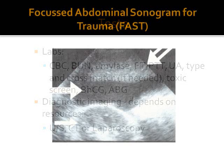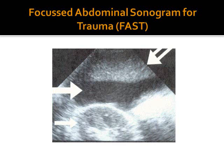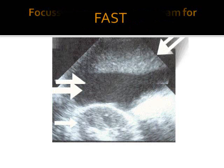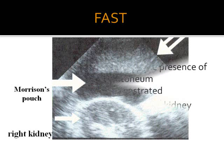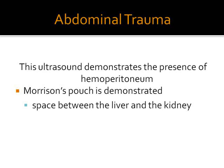Focused Abdominal Sonogram for Trauma checks for free fluid in the abdomen. This is the kind of ultrasound that we would see if there is fluid in Morrison's pouch, for example, which is a common site of fluid pooling in a patient who is supine with abdominal injury.